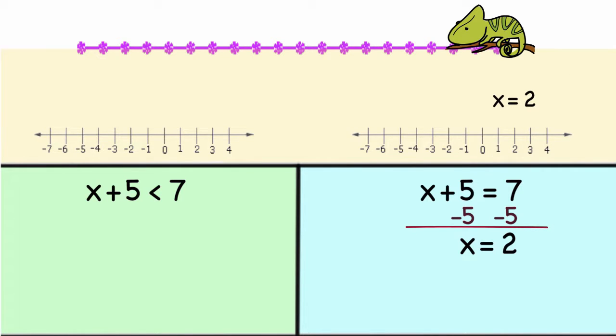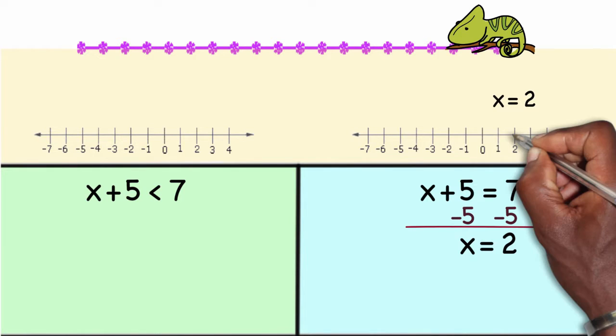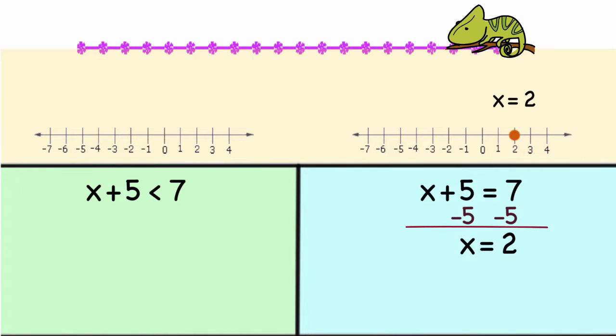Now if I want to represent this answer on a number line I'll go over to 2 on the number line. Right here x equals 2 is a solution to the problem x plus 5 equals 7.